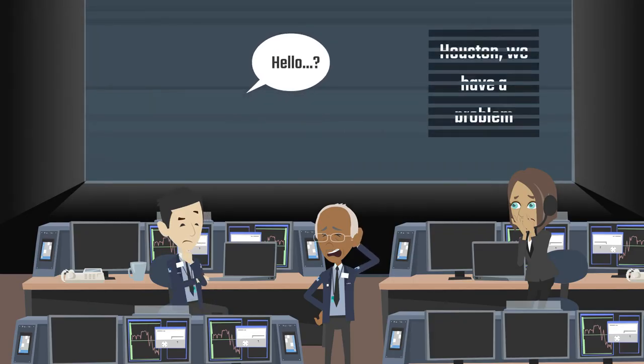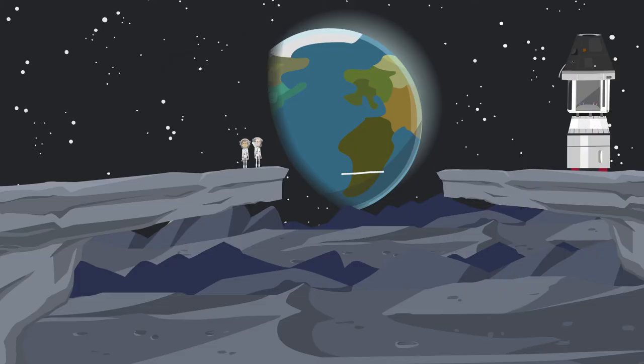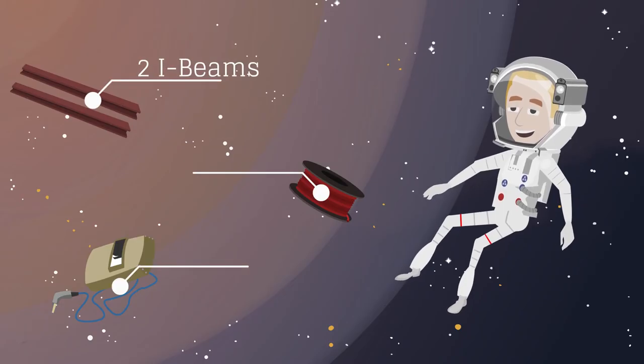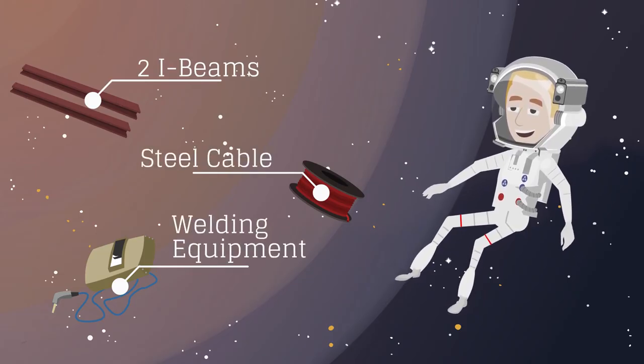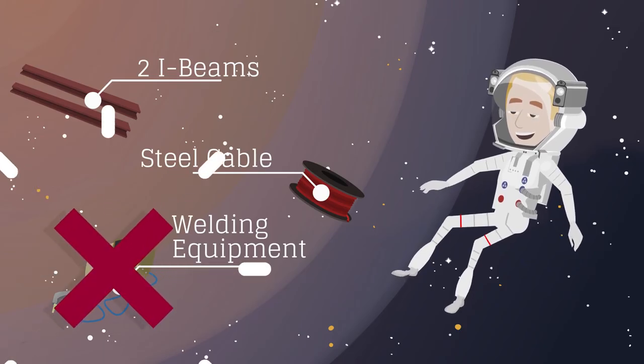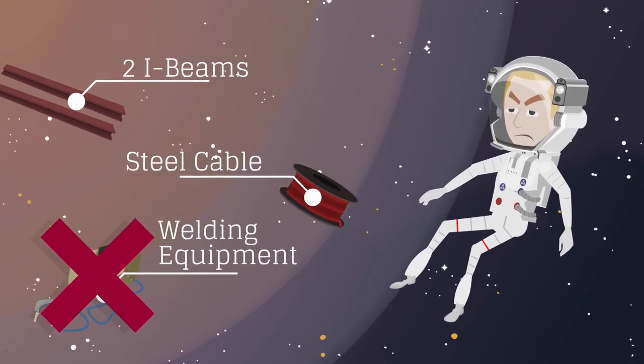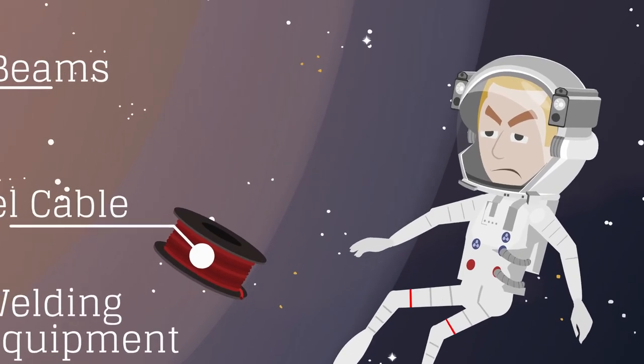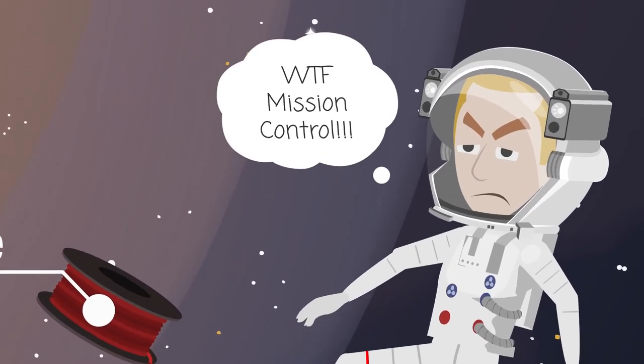You radio Mission Control and let them know of the problem. You have a 16-meter canyon to bridge, but only have two 10-meter long aluminum I-beams and a 50-meter spool of steel cable to construct a bridge. Of course, the welding equipment is in the supply ship on the other side of the canyon, so you can only construct pin connections between structural elements or use multiple bolts to approximate a fixed connection between parts.